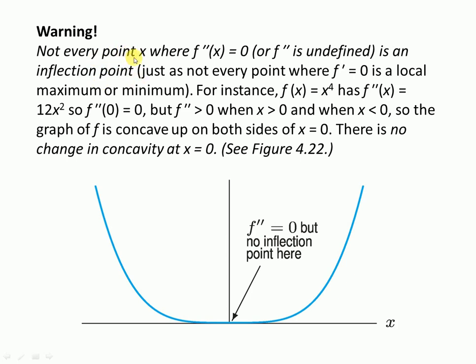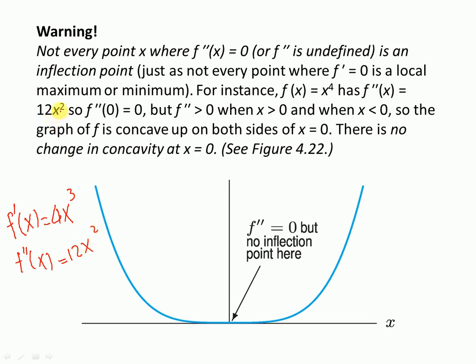There is a warning you should be careful about. Not every point x where your f double prime is zero or undefined is an inflection point. After you find the value of x when setting f double prime equal to zero, you have to test the sign of f double prime. If it's not changing sign, then that point is not the inflection point. For example, consider f of x equals x to the fourth power. Taking f prime gives 4x cubed, and taking f double prime gives 12x squared.